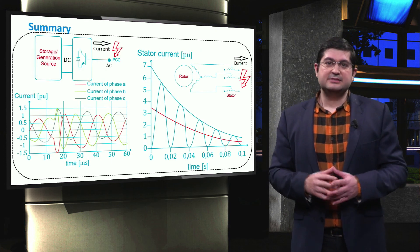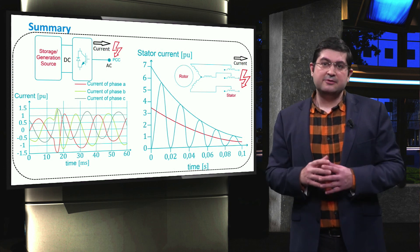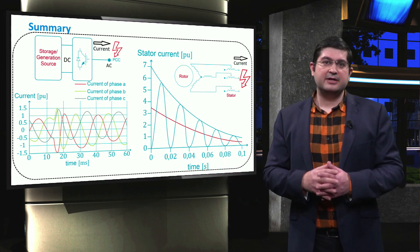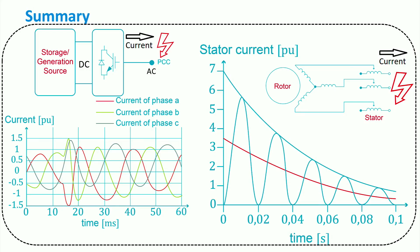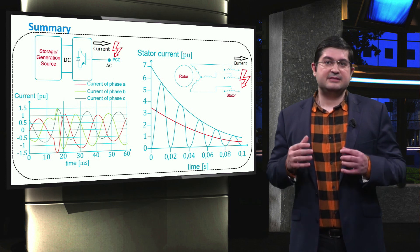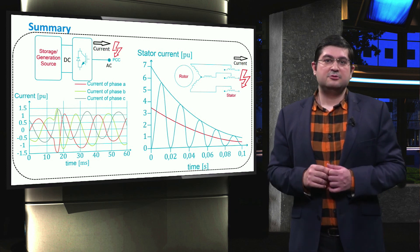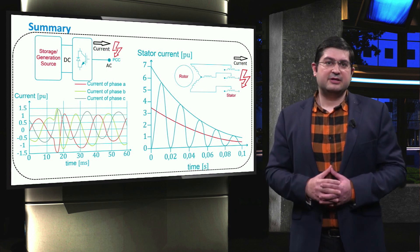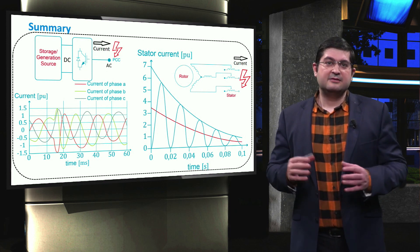In summary, we addressed the behavior of two types of distributed generators with and without power electronic interfaces. We discussed that distributed generators based on electrical machines will become unstable if the fault clearing time is greater than the critical clearing time. Moreover, we compared the fault current of these two types of electrical components. The large contribution of electrical machines to the fault current facilitates fault detection, though the low contribution of components using power electronic interfaces makes it difficult to detect faults in microgrids.